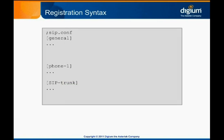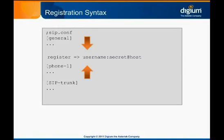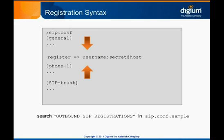An IP address for an Asterisk system is likely to be static, but it's still common to register instead of relying on the address never changing. Before we look at the syntax to cause Asterisk to register with a trunk provider, we want to stress one very important point: the location of the register line in sip.conf must be below all of the general configuration and above the first user or peer account. You can search for OUTBOUND SIP REGISTRATIONS, in all caps, in the default sip.conf and put your registrations there.